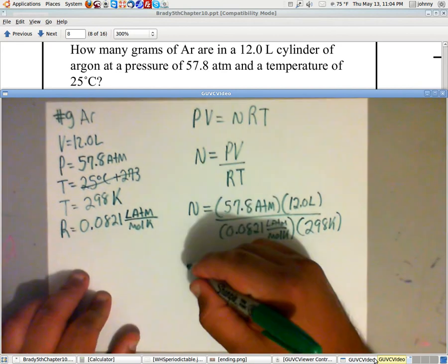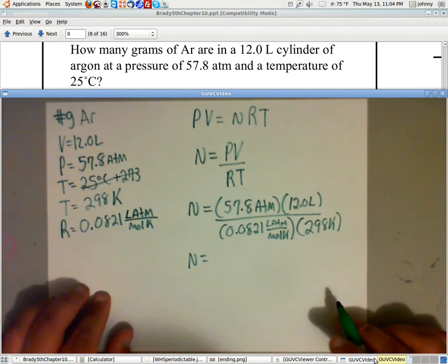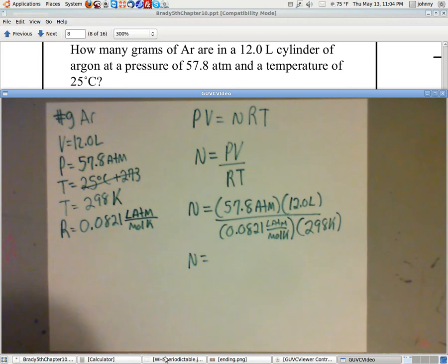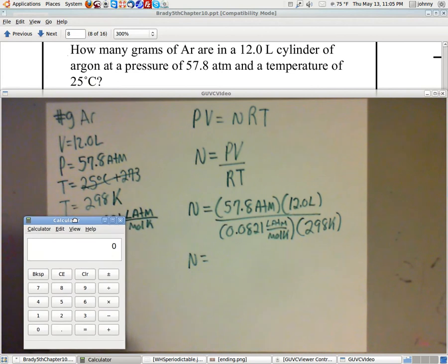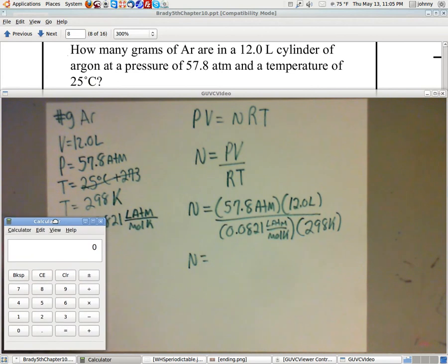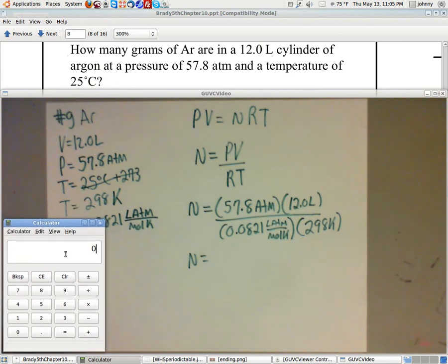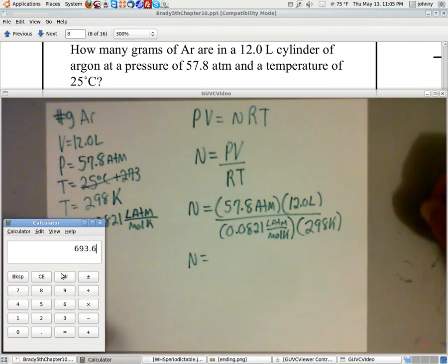We'll need to punch this in on a handy dandy calculator. So let's go ahead and do that. I'm going to pull up a real calculator. If you're wondering what operating system I'm using, I'm using Linux, Ubuntu, the 10.04 LTS. So let's type this in. We've got 57.8 times 12. And that's my two numbers in the top. I get 693.6.